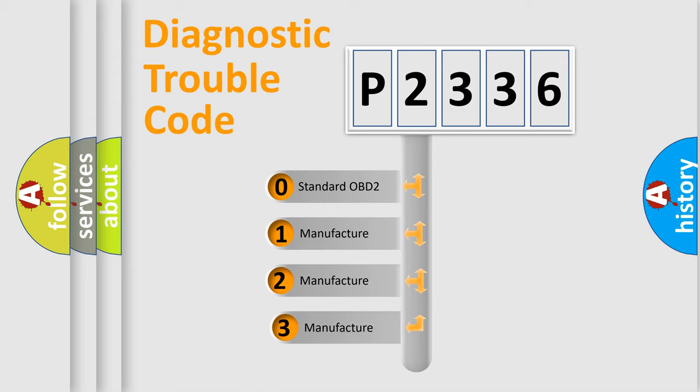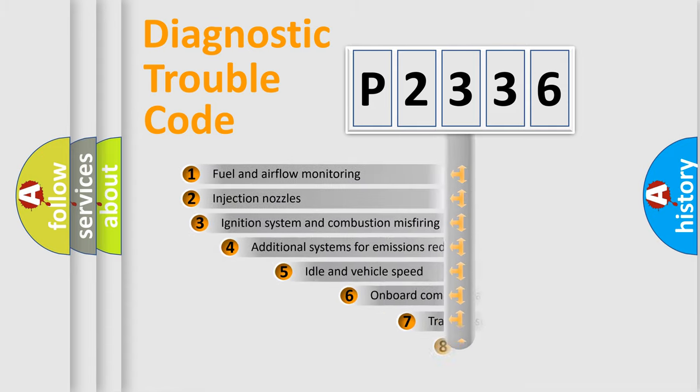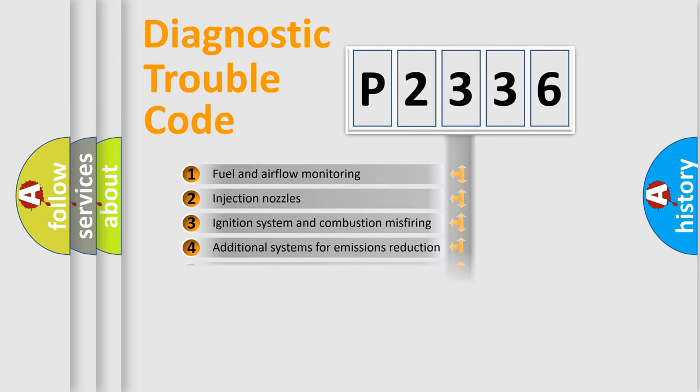If the second character is expressed as zero, it is a standardized error. In the case of numbers 1, 2, or 3, it is a more prestigious expression of the car-specific error. The third character specifies a subset of errors. The distribution shown is valid only for the standardized DTC code.